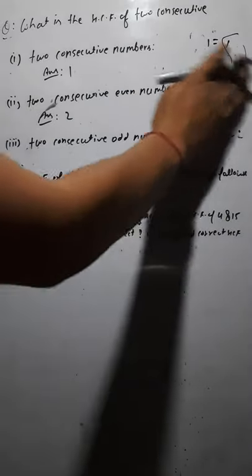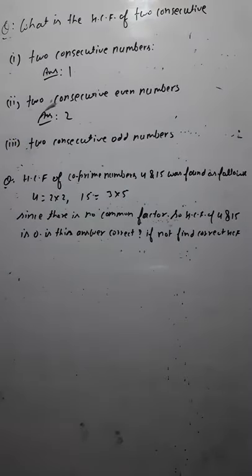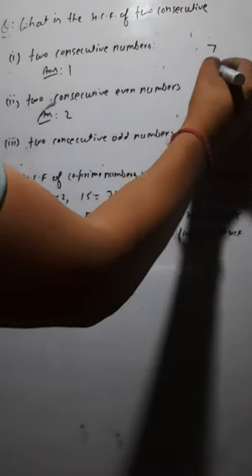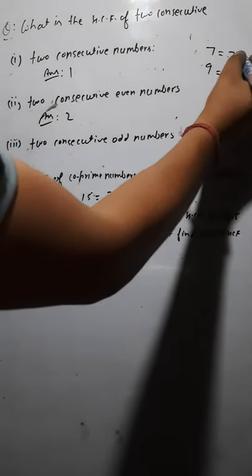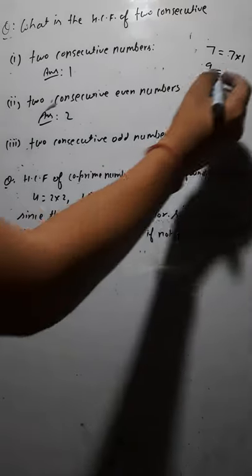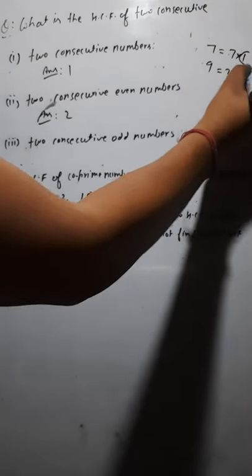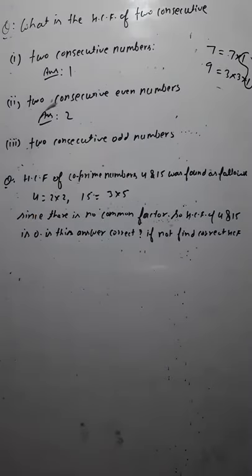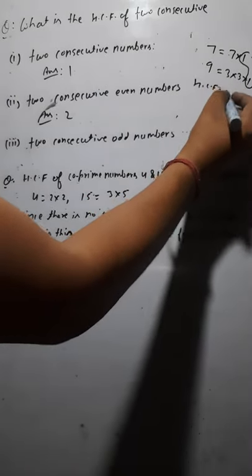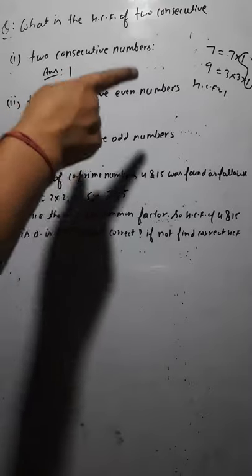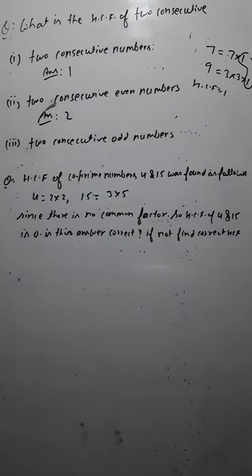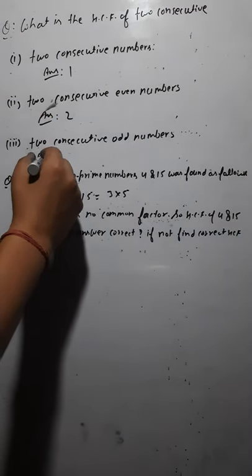Let's take one more example with consecutive odd numbers: seven and nine. Prime factorization of seven: seven × one = seven. Prime factorization of nine: three × three × one = nine. If you see the common factor, it is one again. So the HCF is one. Every time you take two consecutive odd numbers, every time the HCF is one. So HCF of two consecutive odd numbers is one.